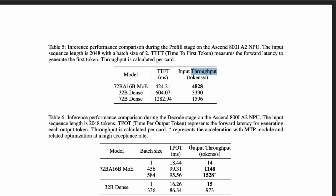Across all three metrics, the model achieves the fastest time to first token. The 72B total / 16B activated parameter model achieves 4,828 input throughput tokens per second. For output throughput across different batch sizes — 1, 4, 56, 584 — this model consistently hits the top output throughput. So not only is this a novel architecture that scores well on benchmarks, it is also highly efficient to deploy and serve through their inferencing techniques.